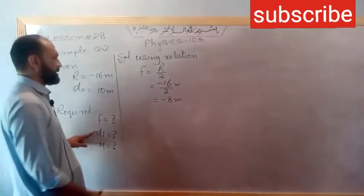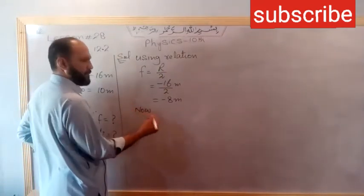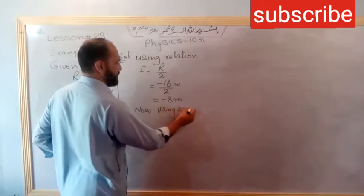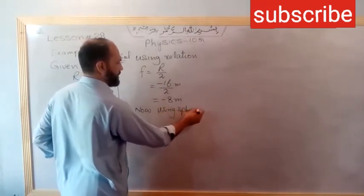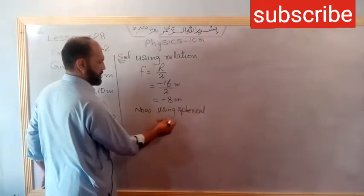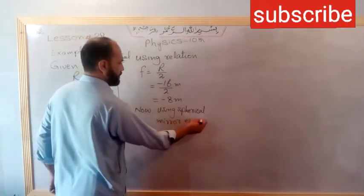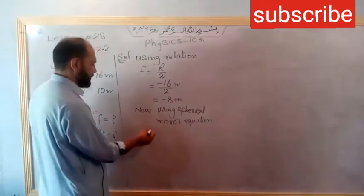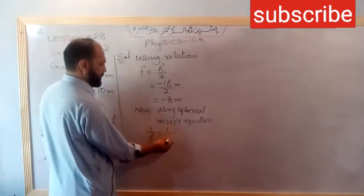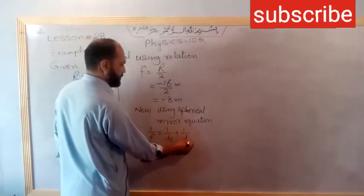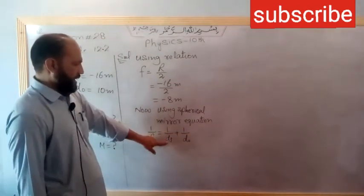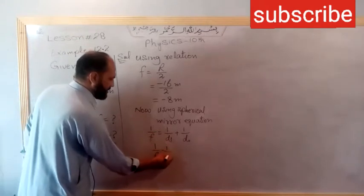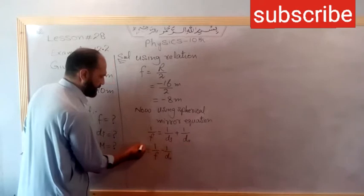Now to find the distance of the image, we will use the mirror equation, the spherical mirror equation. Now using the spherical mirror equation: one over f equals one over di plus one over d naught. One over di equals one over f minus one over d naught.